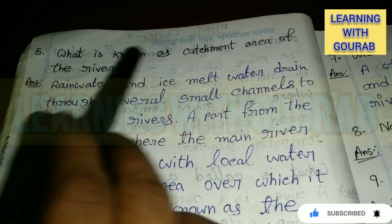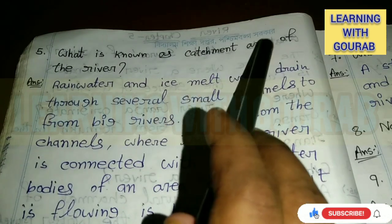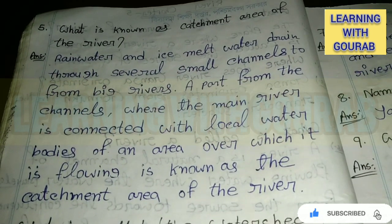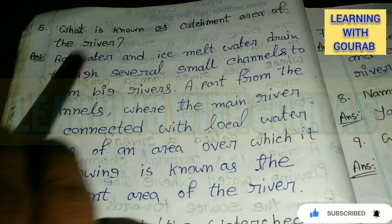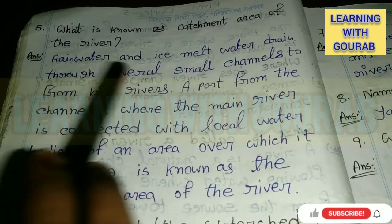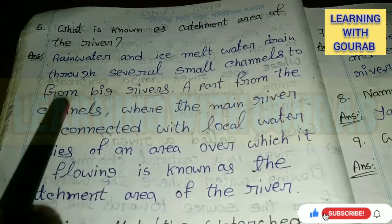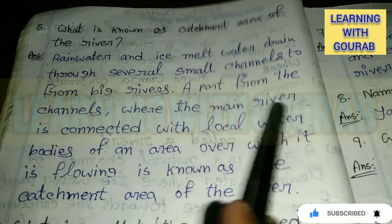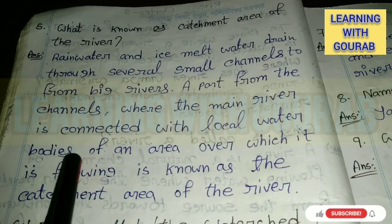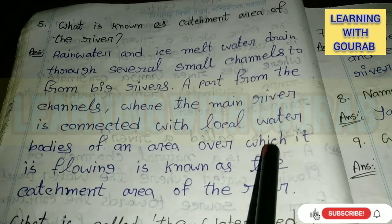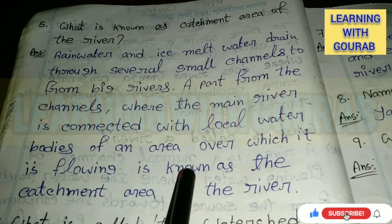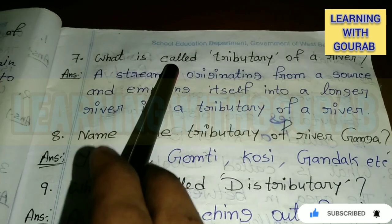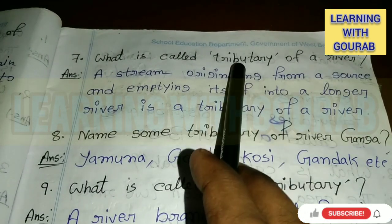Next: What is known as the catchment area of a river? Answer: Rainwater and ice melt water drain through several small channels to form big rivers, apart from the channels where the main river is connected with local water bodies of an area. The total area over which the river flows is known as the catchment area of the river.